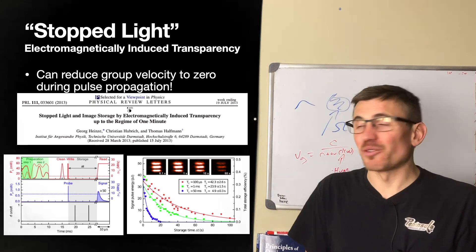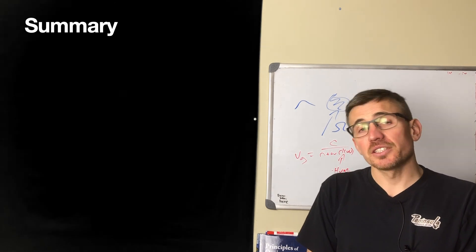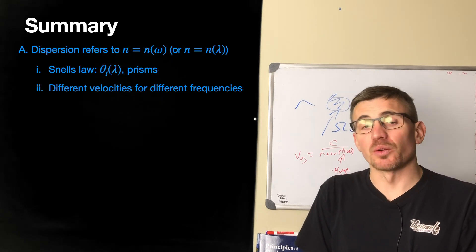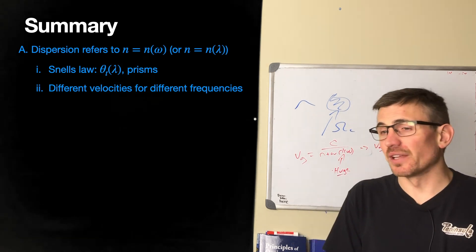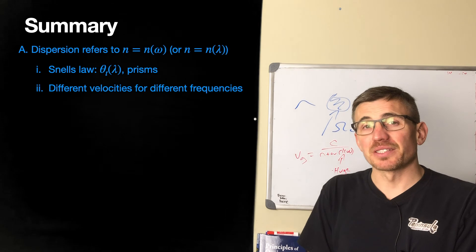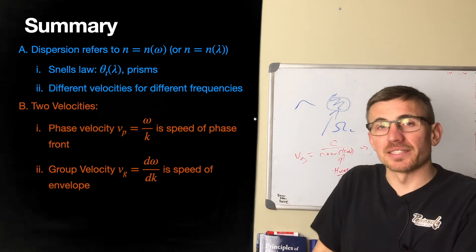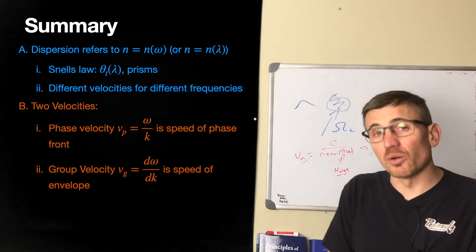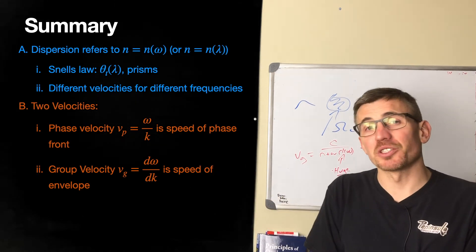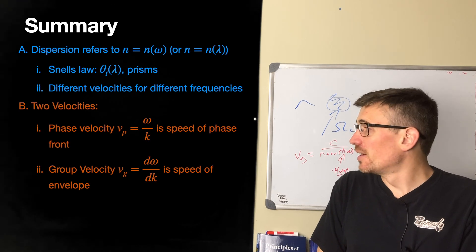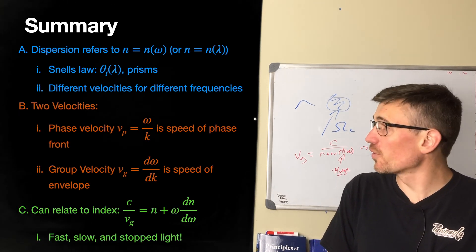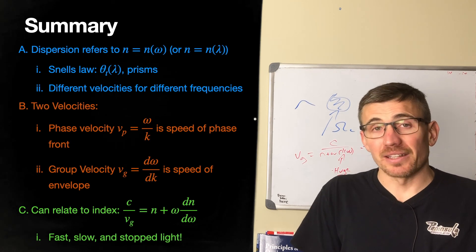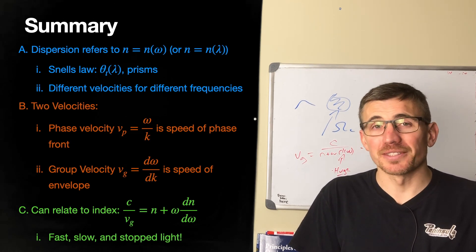That's a lot of information. Let's summarize. Dispersion refers to the index of refraction depending on frequency or wavelength, leading to different bending of light at different frequencies via Snell's law — allowing prisms. Longitudinally, even with light going in the same direction, we have two different velocities: phase velocity, the velocity of a phase front, given by omega over k; and group velocity, the slope of the dispersion curve, d omega by dk, which can be zero, positive, or negative. The group velocity can be related to the index as c over (n plus omega·dn/d omega), leading to slow, stopped, and re-accelerated light. Next time we'll talk about coherence length.